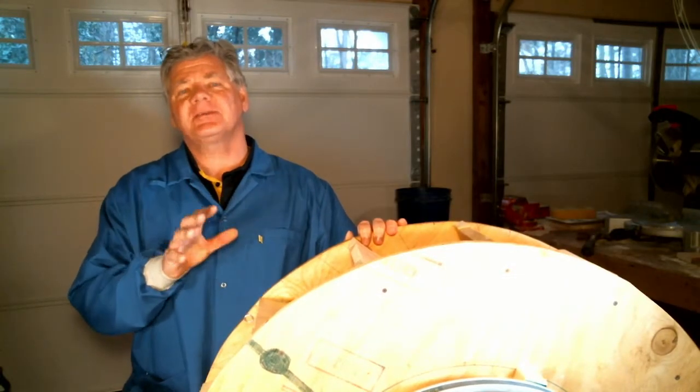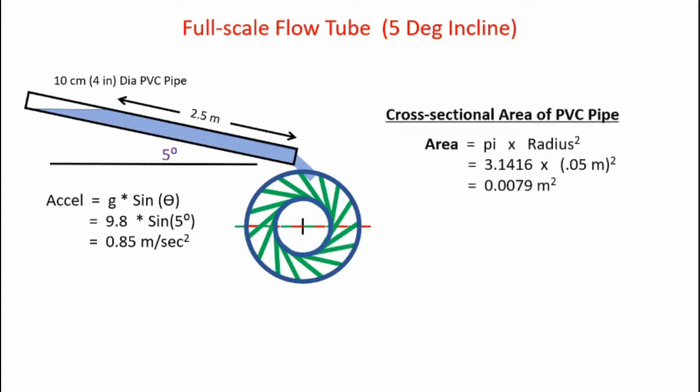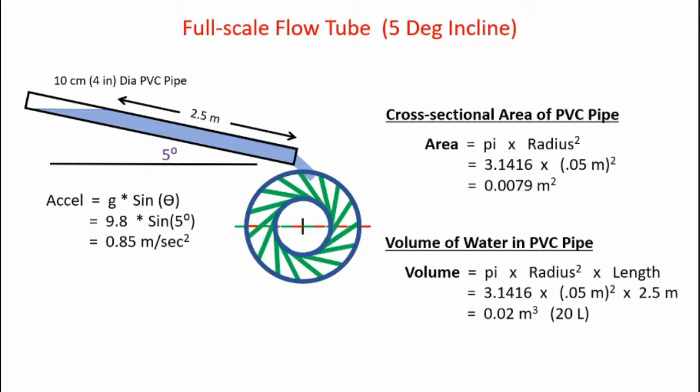Now let's apply this theory to the full scale PVC flume. Here's the system we'll be analyzing. Once again, we have a 4 inch diameter or 10 centimeter diameter PVC pipe. The length of the water inside the pipe is approximately 2.5 meters. I'll incline our pipe by 5 degrees. Here's our acceleration equation for the acceleration along the pipe. Acceleration equals g times sine theta, which comes out to be 0.85 meters per second squared. We're going to need to know the cross-sectional area of the PVC pipe. The area is pi r squared, which comes out to be 0.0079 meters squared. We also want to know the volume inside the pipe. Volume is the area times the length of water, which comes out to be 0.02 meters cubed, which is 20 liters.